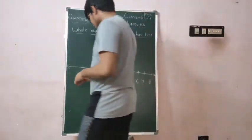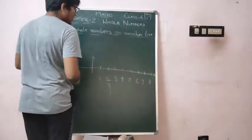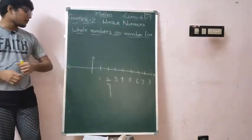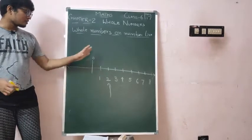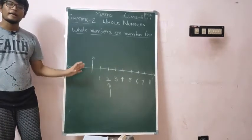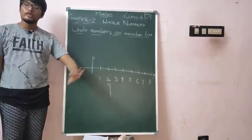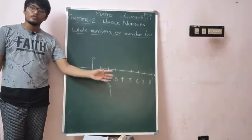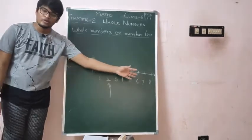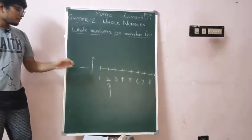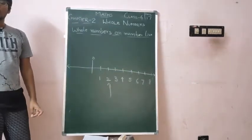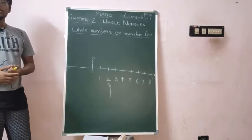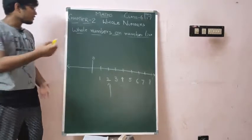Very simple. I think you understood this. This is the left and right concept on the number line, and this is how we represent whole numbers on the number line from 0 to infinity. Can we go to the next topic?